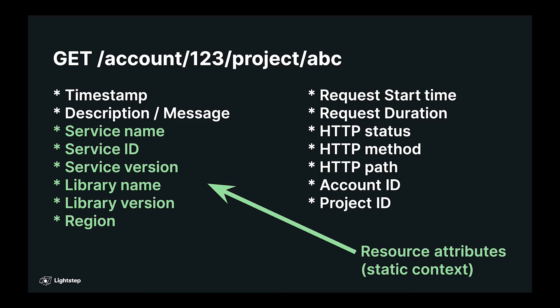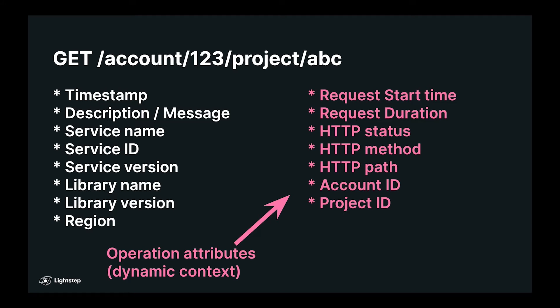So these are things like what server is it running on, what library is it in, what region in your infrastructure cloud is it running in, that kind of stuff. There are also attributes which are specific to this run of this operation, but they're shared across all of the events in the operation. So if you're talking about an HTTP request, that request as a whole has a start time and a duration. There's a status method, a path.